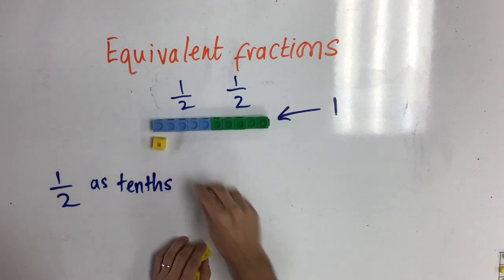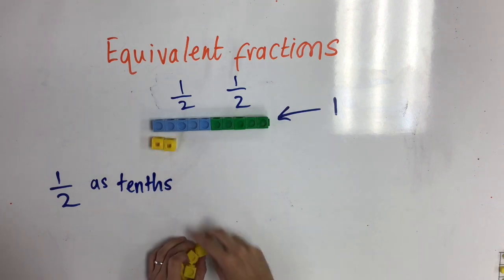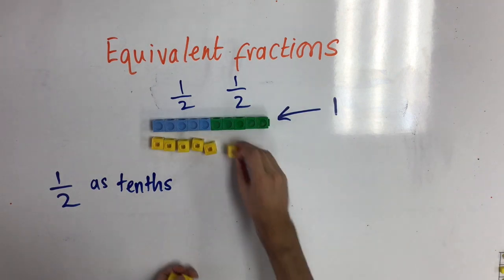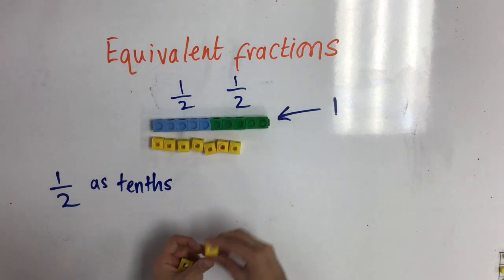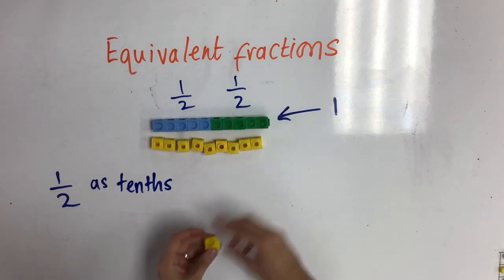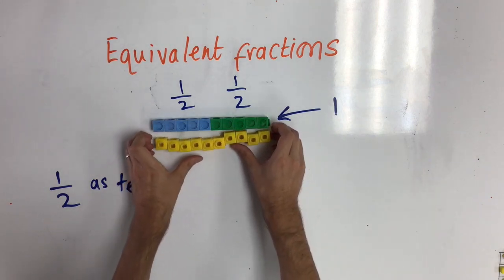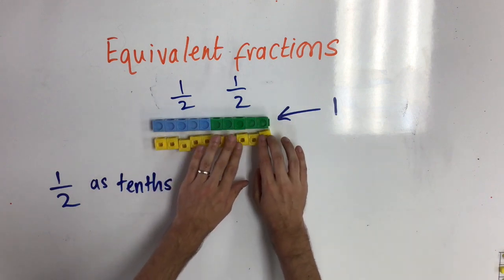One, two, three, four, five, six, seven, eight, nine, ten. We know this works because it is exactly the same length as my one.